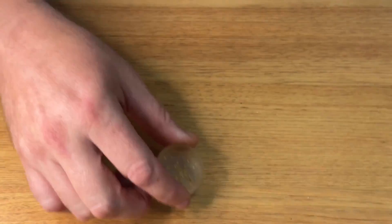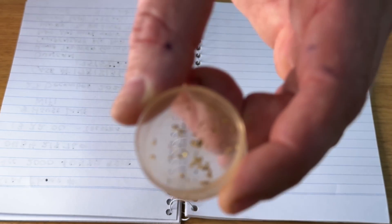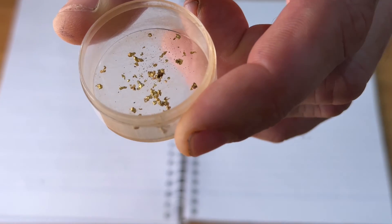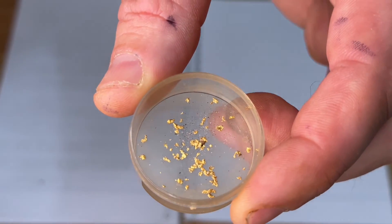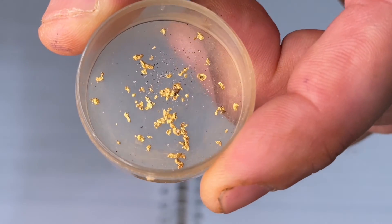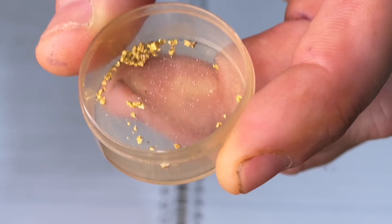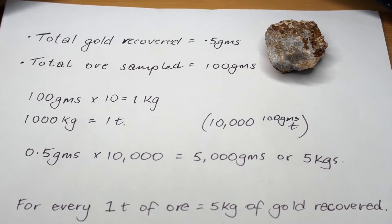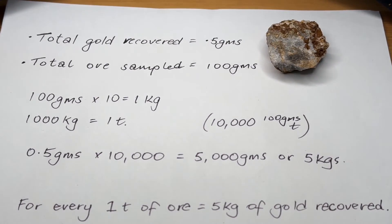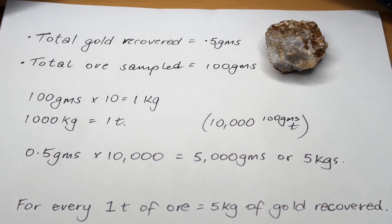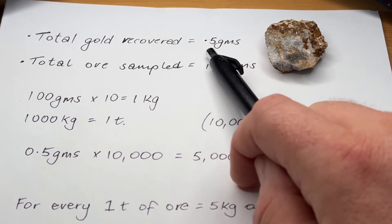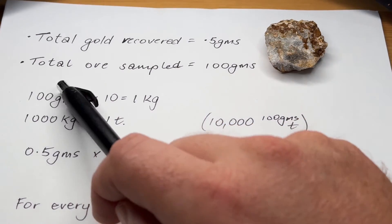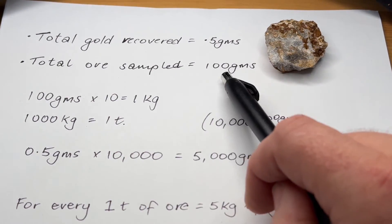Let's put our scales aside. Just before we start the calculations, I thought I'd show you the gold here. So there it is — 0.5 grams. Half a gram of gold.